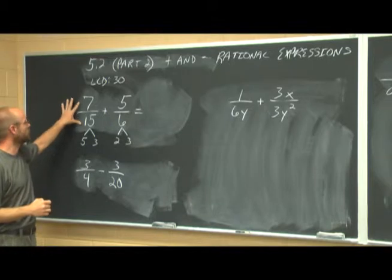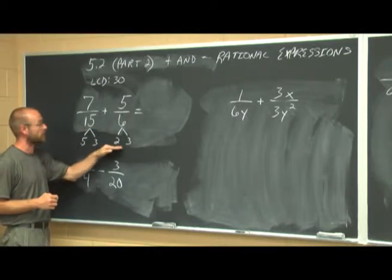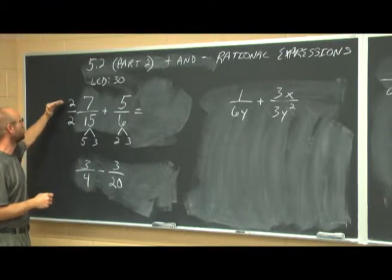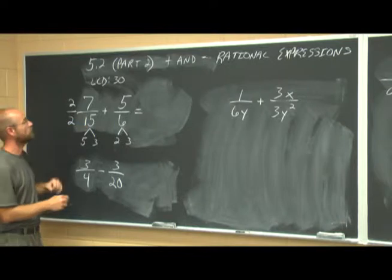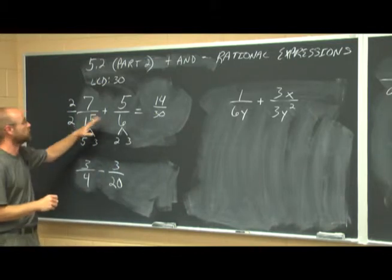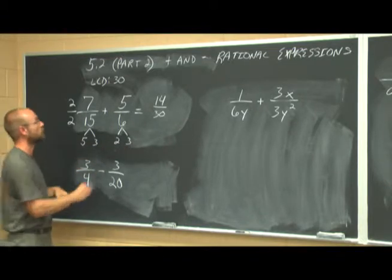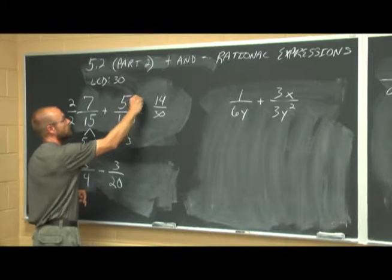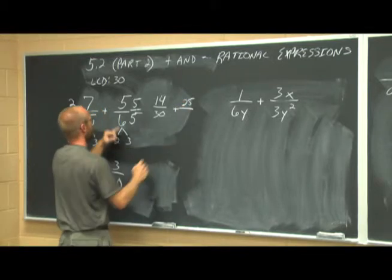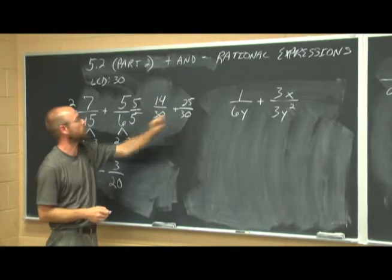I have to change both fractions to have a denominator of 30. For 7/15, it has factors 5 and 3 but is missing the 2, so I multiply top and bottom by 2: 2 times 7 is 14, and 2 times 15 is 30. For 5/6, it has 2 and 3 but needs the factor of 5, so I multiply top and bottom by 5: 5 times 5 is 25, and 6 times 5 is 30. Once we have the common denominator, we add the numerators: 14 plus 25 is 39.